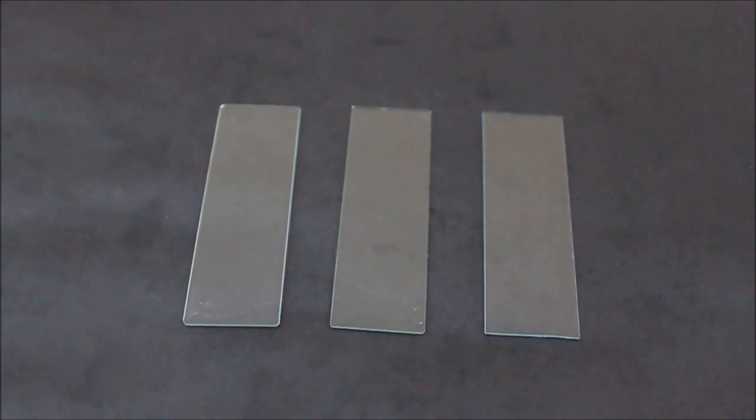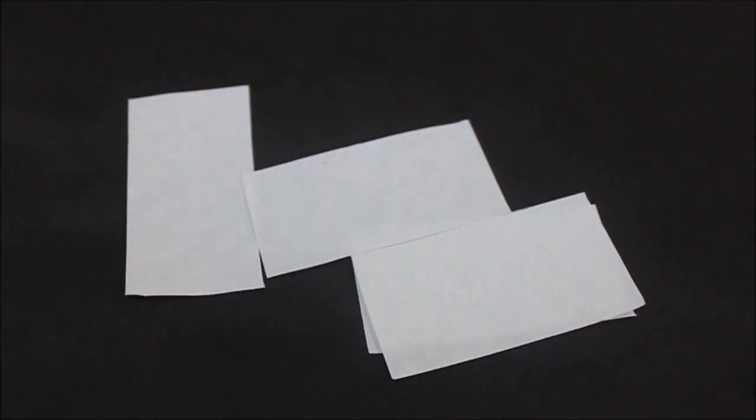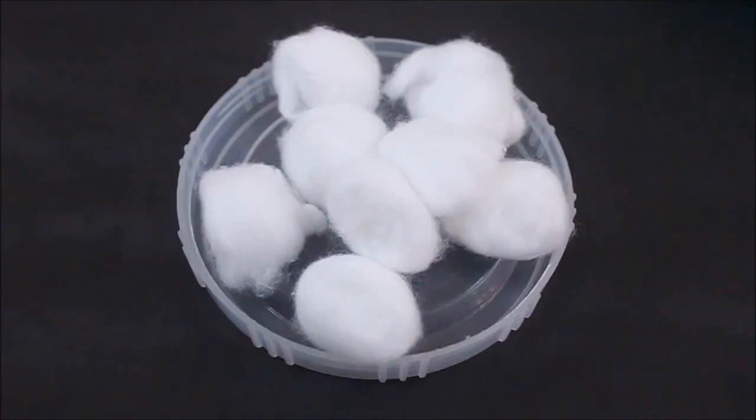Bleeding time is the time required for bleeding to stop. Some materials needed for the Duke's method are clean glass slide, lancet, timer, filter paper, 70% alcohol, and cotton.